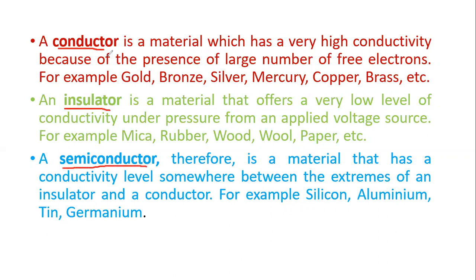A conductor is a material which has very high conductivity. That means the flow of electrons and electricity is highest in a conductor. This is because the presence of electrons is very large. For example, gold, bronze, silver, mercury, copper, and brass are some examples of conductors which have the highest amount of conductivity among all materials based on their electrical properties.